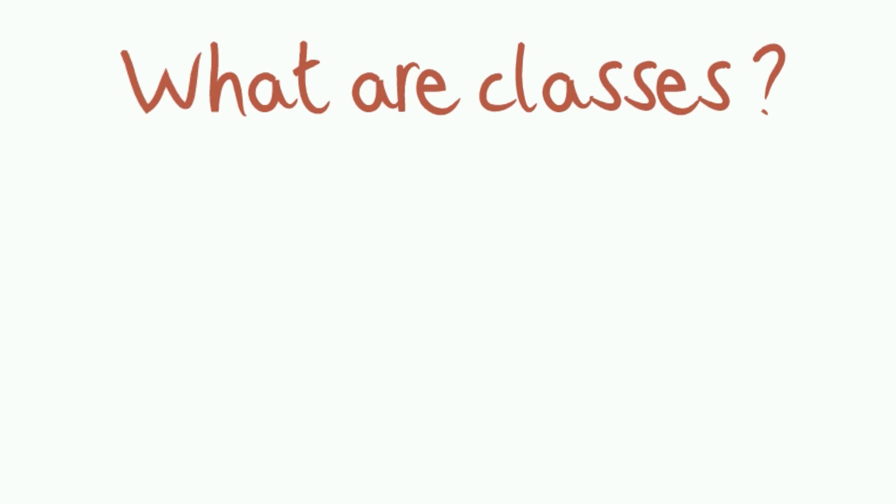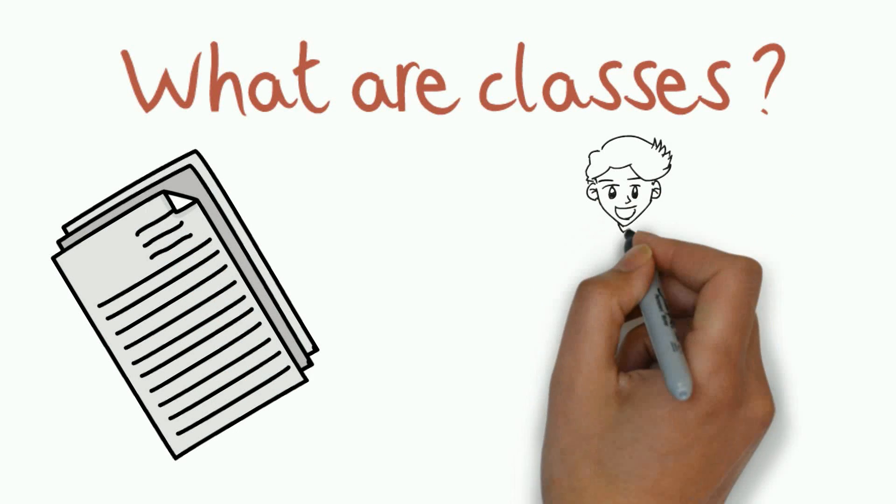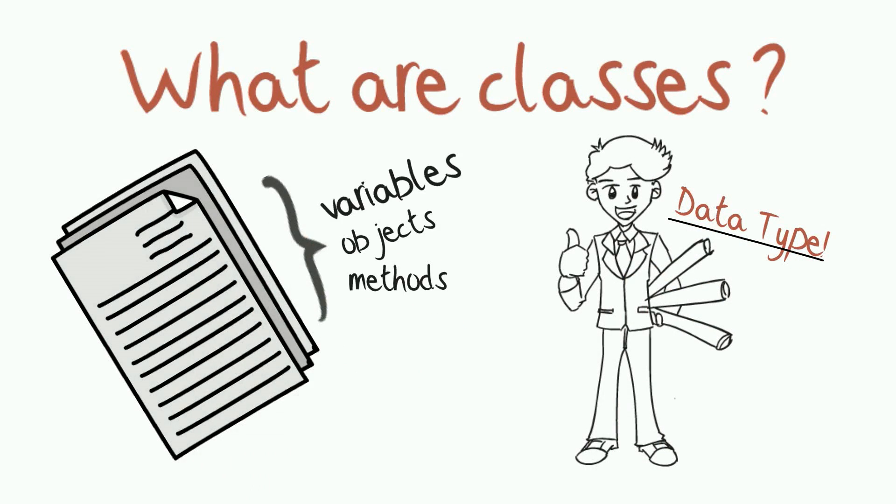What are classes? Classes are the blueprints of a user-defined data type. The classes define the characteristics of a data type.